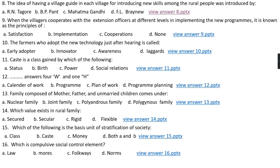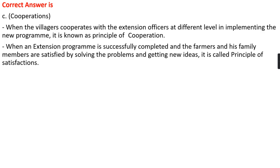Question number nine: When the villager cooperates with the extension officer at different levels in implementing a new program, it is known as the principle of option A, satisfaction; option B, implementation; option C, cooperation; option D, none. The right answer is option C, that is cooperation. When a villager cooperates with the extension officer in implementing the new program, this comes under the principle of cooperation. When an extension program is successfully completed and a farmer and his family members are satisfied by solving the problem and getting new ideas, then it comes under the principle of satisfaction.